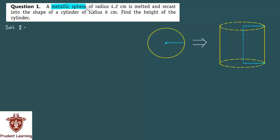A metallic sphere of radius 4.2 cm is melted and recast into the shape of a cylinder of radius 6 cm. Find the height of the cylinder.